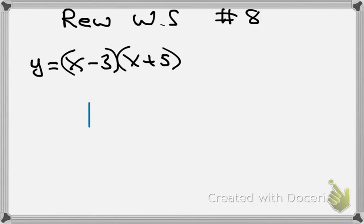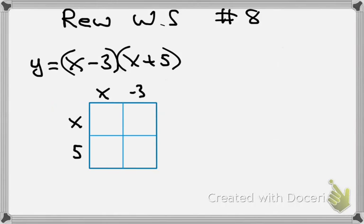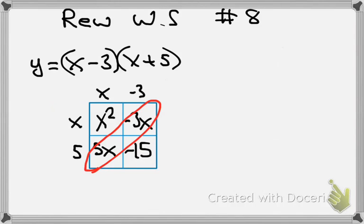We'll do the box method because we haven't done that very much, just to practice it. So the box method to foil, we're going to go x and negative 3 and x and 5. So what's x times x? What is x times negative 3? What is x times 5? And what is 5 times negative 3? And so we have to combine the diagonals, right? So we end up with y equals x squared plus 2x minus 15. And that is in standard form.